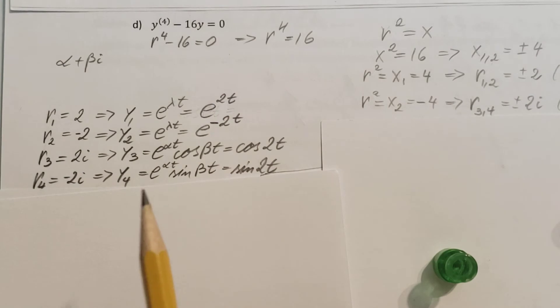So, my first complex root, r3, will be equal to 2i. That's gonna give me y3. And it is e to the alpha t cosine beta t. Alpha is my real part. Beta is my imaginary part.